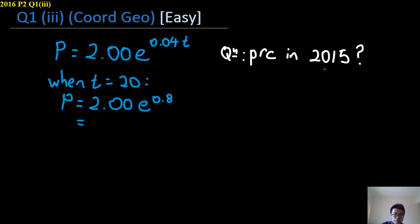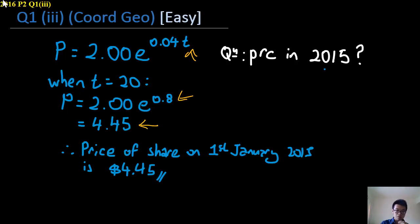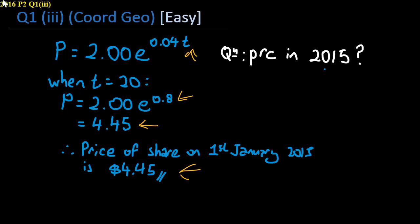So all you have to do is substitute the T value inside here. This value is 0.8, giving your answer of 0.45. One last statement, and that's all your answer for part 3.